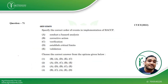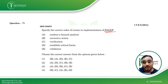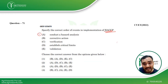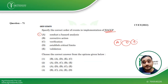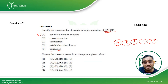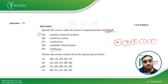Next we have a question from HACCP where we must arrange steps in the correct order. First is hazard analysis — step A. Then establish critical limits — step D. Then corrective action — step B. Then verification — step C. Then validation — step E. So the correct sequence is A, D, B, C, E — option C. This question was also asked in CUET 2022.